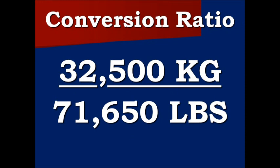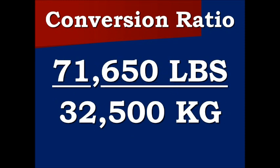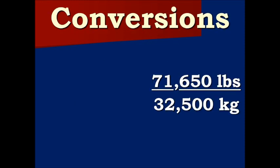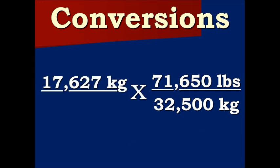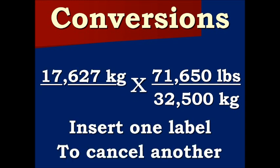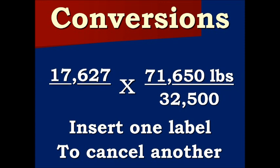Since we are converting to pounds, we need the ratio to have the pounds on top. Now we insert the weight that was on the bill of lading. All we are trying to do right here is insert one label in an effort to cancel another label. So here the kilograms cancel out, which leaves us just with pounds.